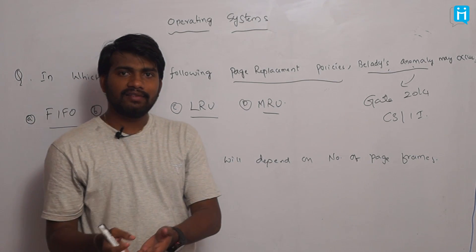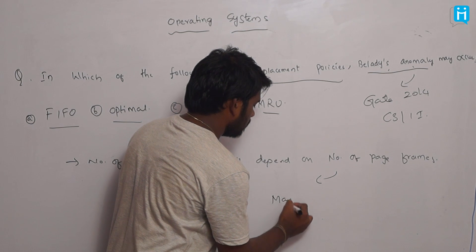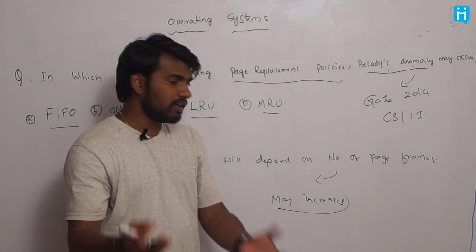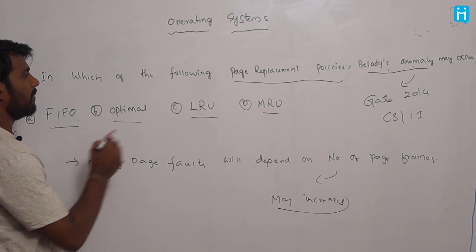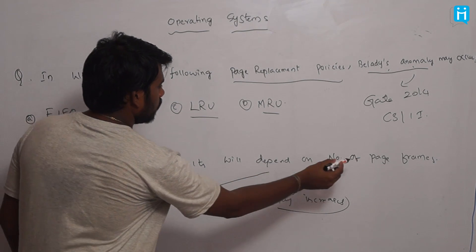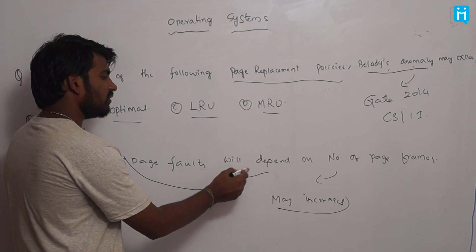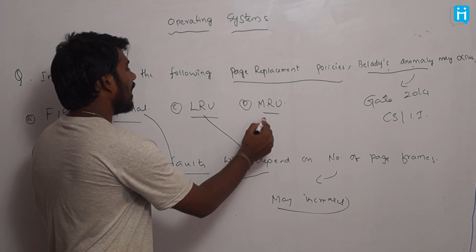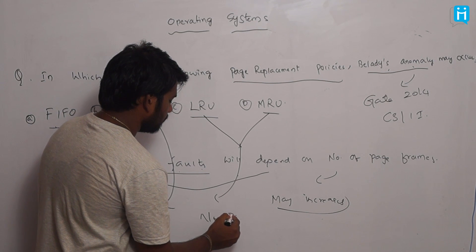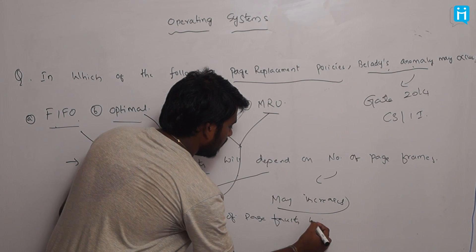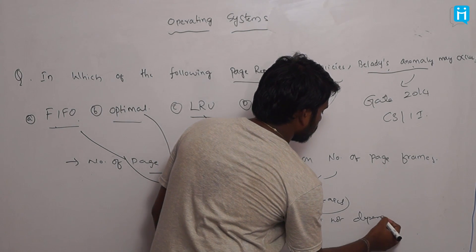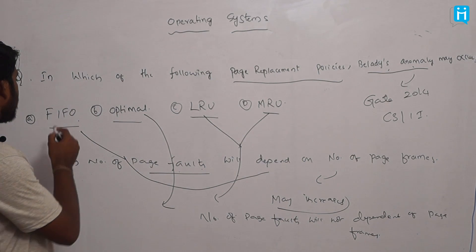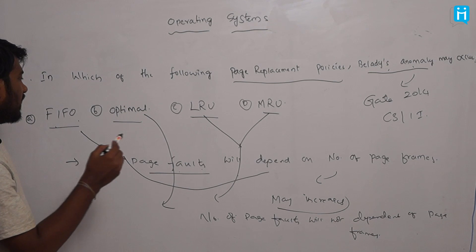What exactly does Belady's anomaly mean? As the number of page frames increases, the number of page faults may also increase — which is counterintuitive. In First In First Out page replacement, the number of page faults is directly proportional to the number of page frames — that is, page faults increase as page frames increase. But for Optimal page replacement, page faults do not increase. For LRU and MRU, the number of page faults does not depend on the number of page frames.